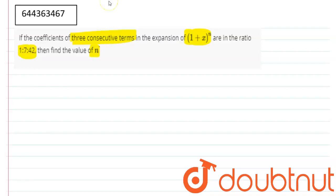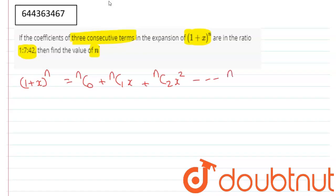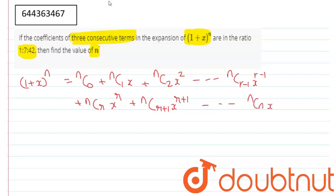We have a binomial (1+x)^n. This can be expanded as nC0 + nC1·x + nC2·x² + ... + nC(r-1)·x^(r-1) + nCr·x^r + nC(r+1)·x^(r+1) + ... + nCn·x^n.